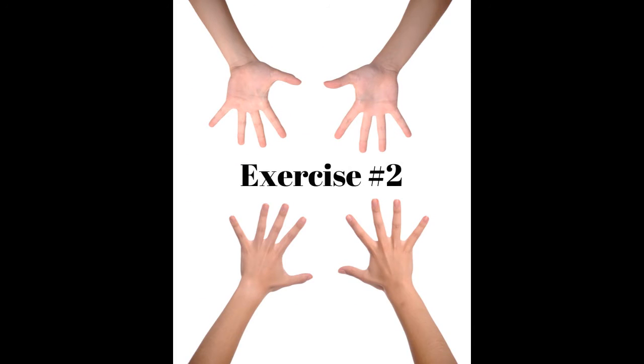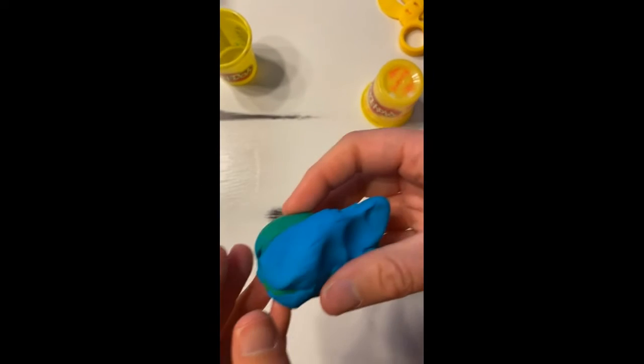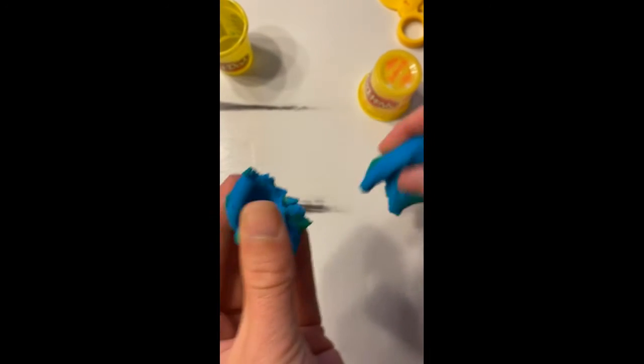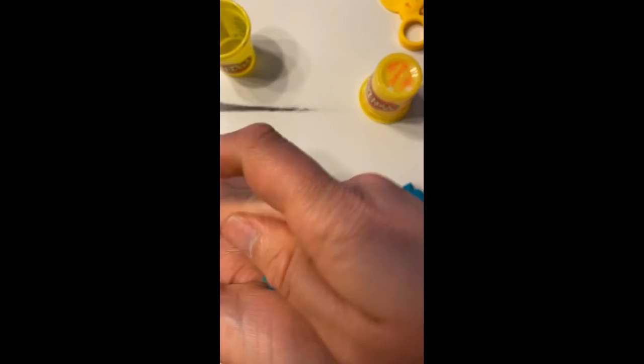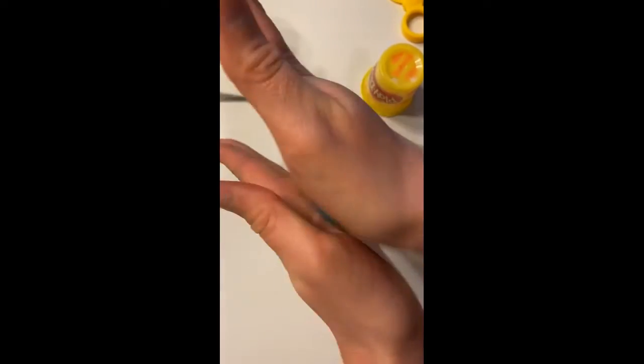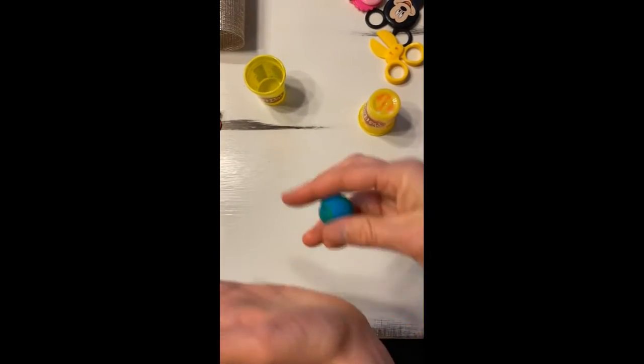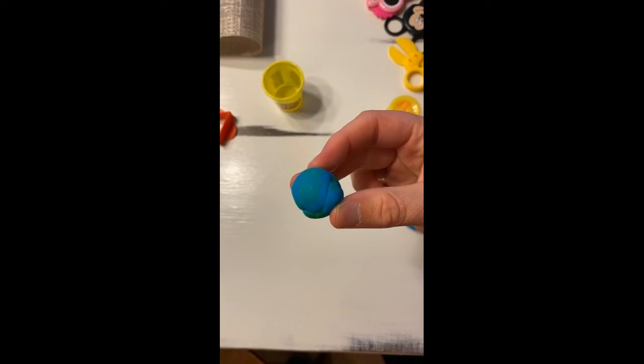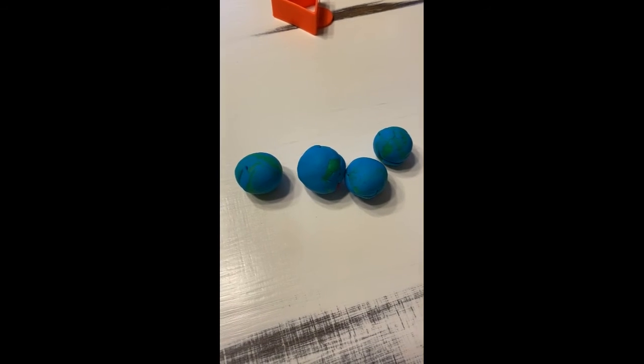Exercise number two. Tear off small pieces of the Play-Doh to roll into balls by placing in the palms of your hands and using both hands to roll into little balls. You can make at least four or five of them.